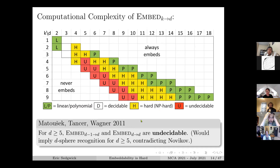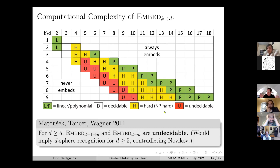My co-authors Matoušek, Tancer, and Wagner were able to show that for this high end, those cases are undecidable - basically that would imply 3D sphere recognition for d greater or equal to five. So we have polynomial here, then ones that are definitely hard, and some that are undecidable. The yellow ones in the middle are hard but we don't really know if they're decidable or undecidable - there's currently a gap in a previous proof.